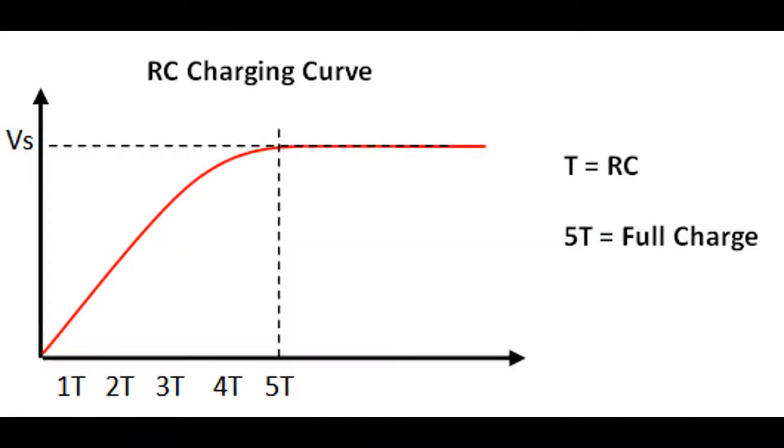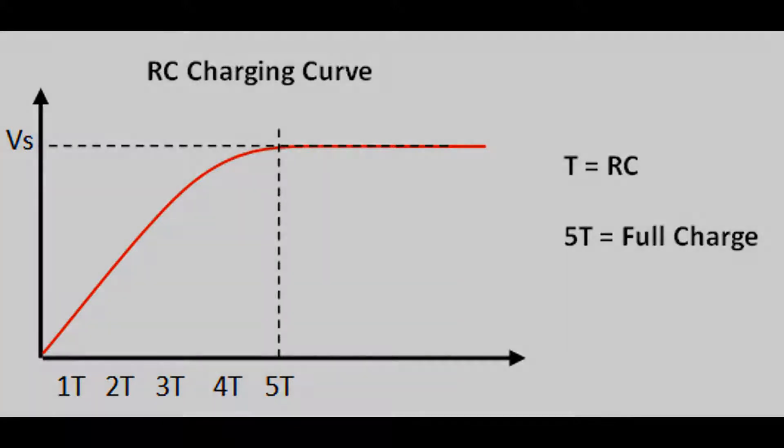The standard formula for working out charge time for a capacitor is 5 times its time constant. The time constant is basically resistance times the capacitance equals time in seconds. Easy. We have a 1k resistor and a 10µF capacitor, so that is 50ms charge time.